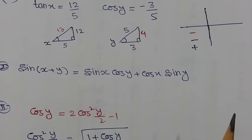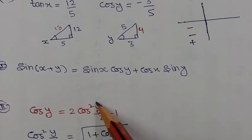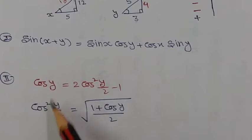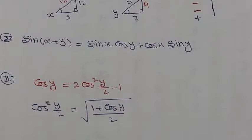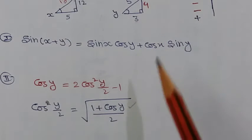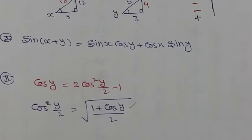For the next part, find the value of cos(y/2). We know that cos y equals 2 cos²(y/2) minus 1. Rearranging, cos(y/2) equals the square root of (1 + cos y) upon 2. Substituting the value of cos y equals minus 3 upon 5 and calculating gives the value of cos(y/2).